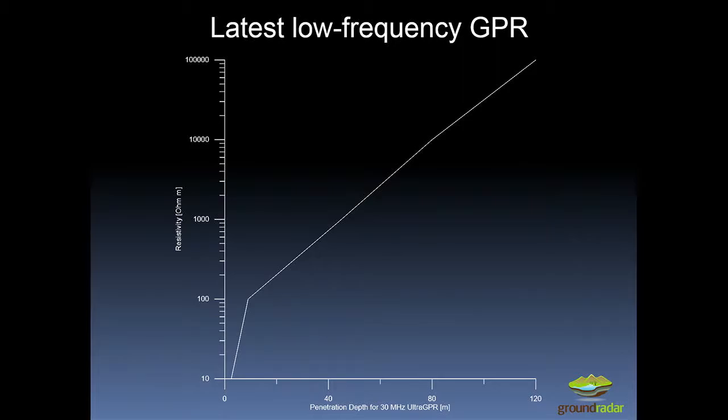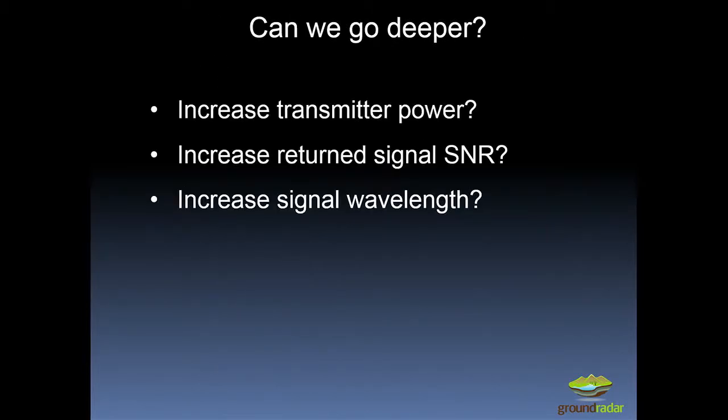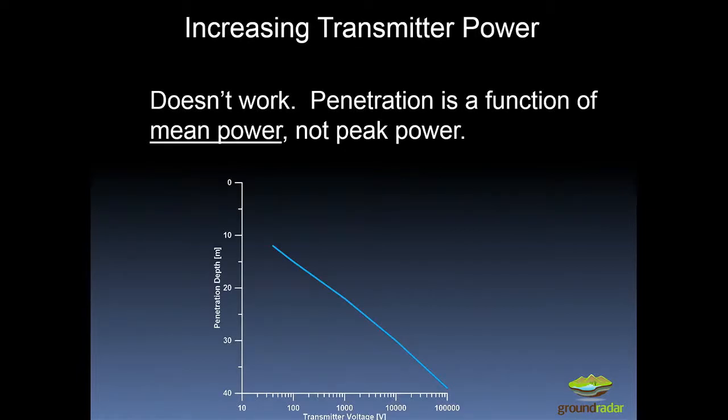But what if we wanted to go deeper? And there's a couple of different ways we can do that. The first one is, well, why don't we make a bigger bang? That's what we do in seismic, for example. We just make a bigger explosion, so we'll have a bigger transmitter pulse. Another way is if we can increase the signal-to-noise ratio or maybe make a larger wavelength. So let's look at each one very quickly here.